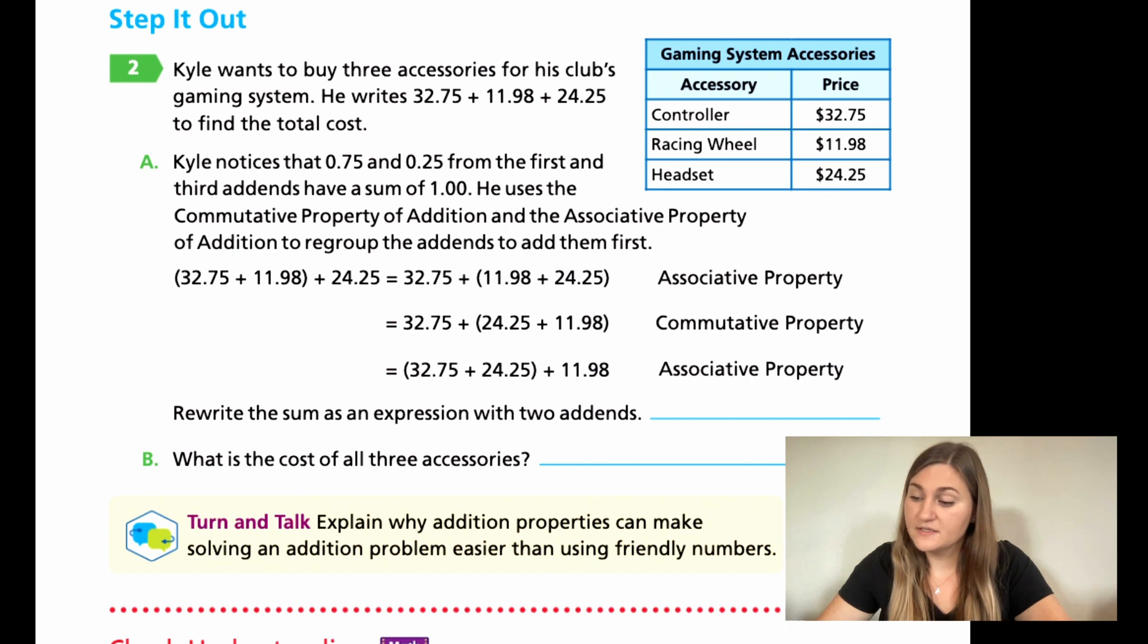And then in A, it says Kyle notices that 0.75 and 0.25 from the first and third addends have the sum of one. So he notices this 75 cents and this 25 cents are going to be equal to $1. He uses the commutative property of addition and the associative property of addition to regroup the addends to add them first. So originally he had the first, second, and third price here. Here's the first, second, and third. He kept the order. He just moved the parentheses and that's the associative property. And the second one, because the two numbers are in the parentheses and because we're adding, he just flipped them. So the order here of the two changed, still the same numbers. Then the associative property again is just moving the parentheses. So now it's the same order, but now the parentheses have moved back. So now the 32.75 and 24.25 are in the parentheses. So we want to rewrite the sums as an expression with two addends.